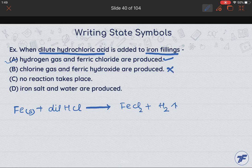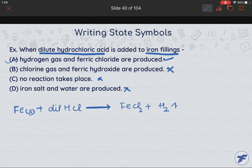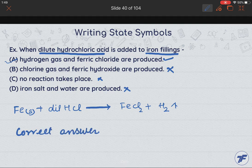Iron salt and water is produced. It is also not the correct one. So our first option is the correct one. So correct answer to this question is answer A.